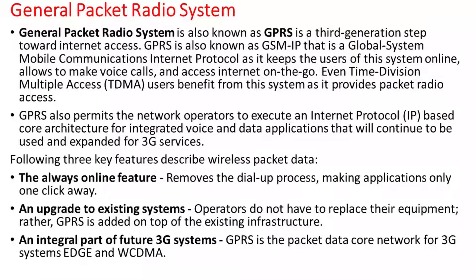General Packet Radio System, also known as GPRS, is a third-generation step towards internet access. GPRS is also known as GSM IP — Global System for Mobile Communication Internet Protocol — as it keeps users online, allowing voice calls and internet on the go. Even TDMA users benefit from this system as it provides packet radio access. GPRS also permits network operators to execute an IP-based core architecture for integrated voice and data applications.